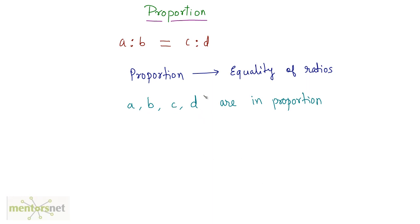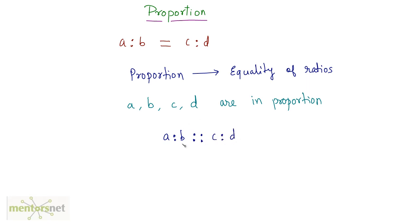Let me show you how to write proportions. We have the first ratio A is to B, written like this, then two colons to indicate 'is proportionate to,' followed by the second ratio C is to D. This is how you write proportions.